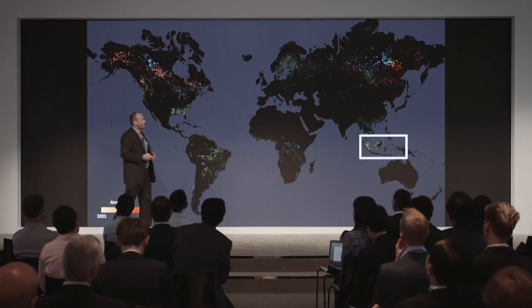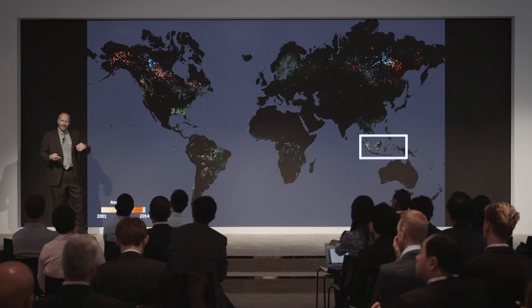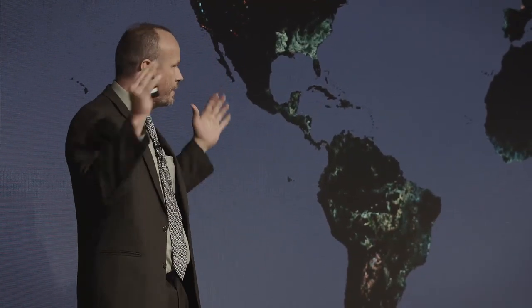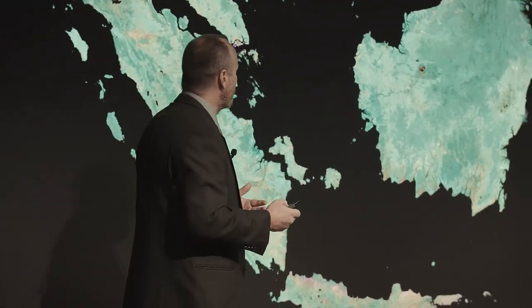We'll zoom into Indonesia to take it down to another scale. One of the things we like about the satellite is that it orbits the Earth and is calibrated consistently, so we have a globally consistent picture that allows apples-to-apples comparisons of what's happening. But we can drill down and look at individual countries, even parks, and say this is what's happening at a local scale. That's another really powerful part of this big data story.